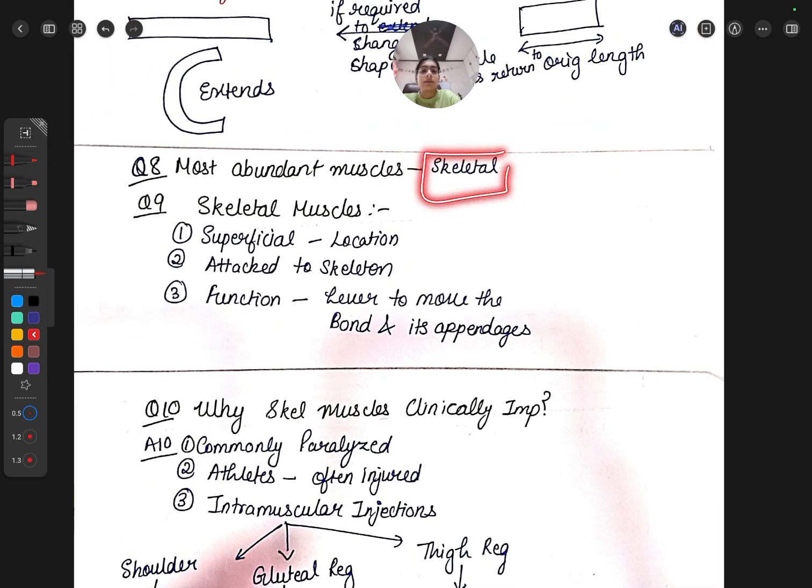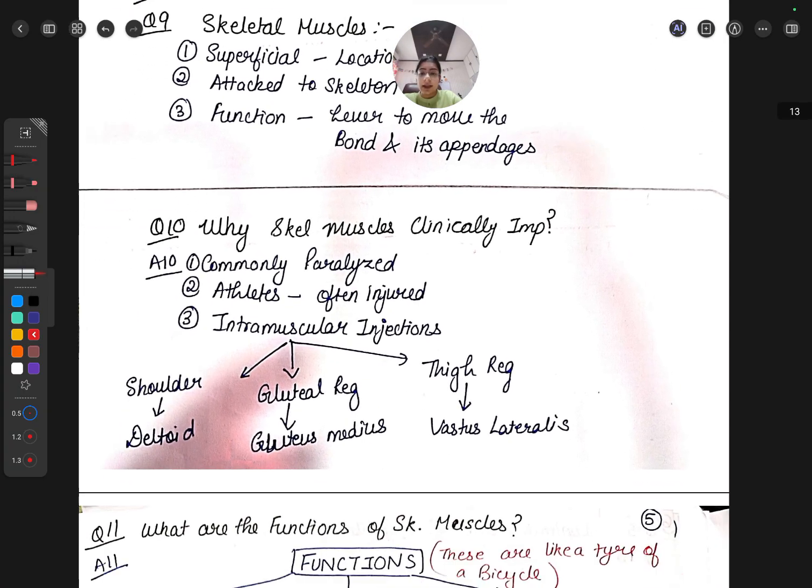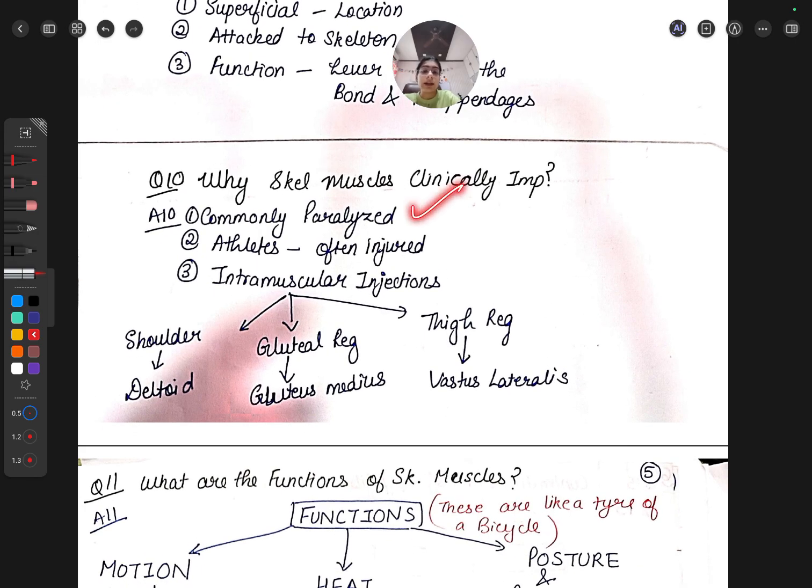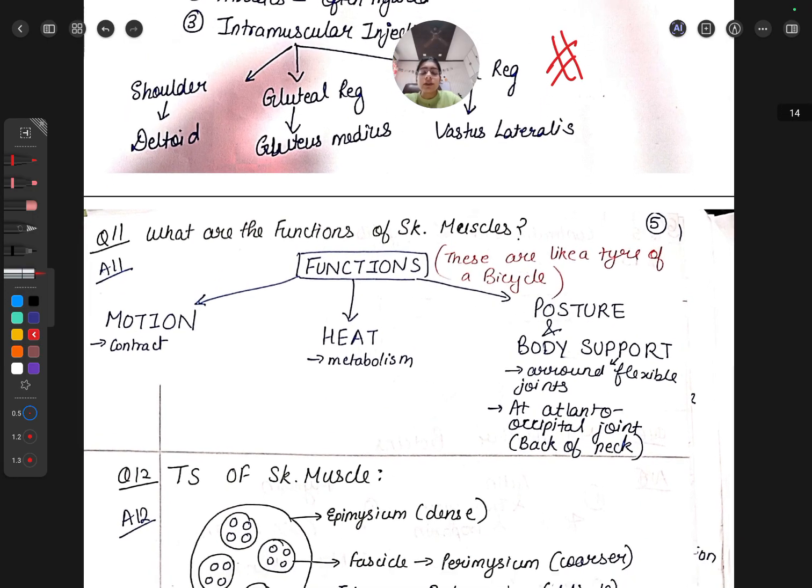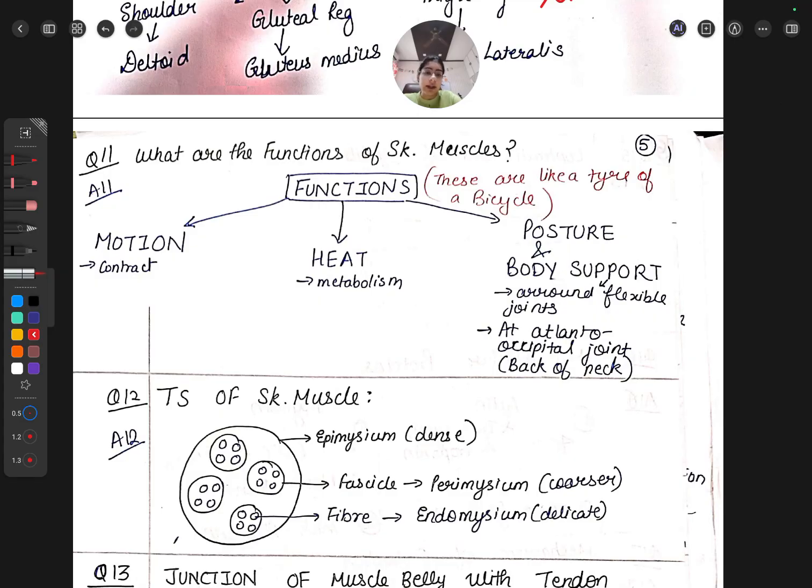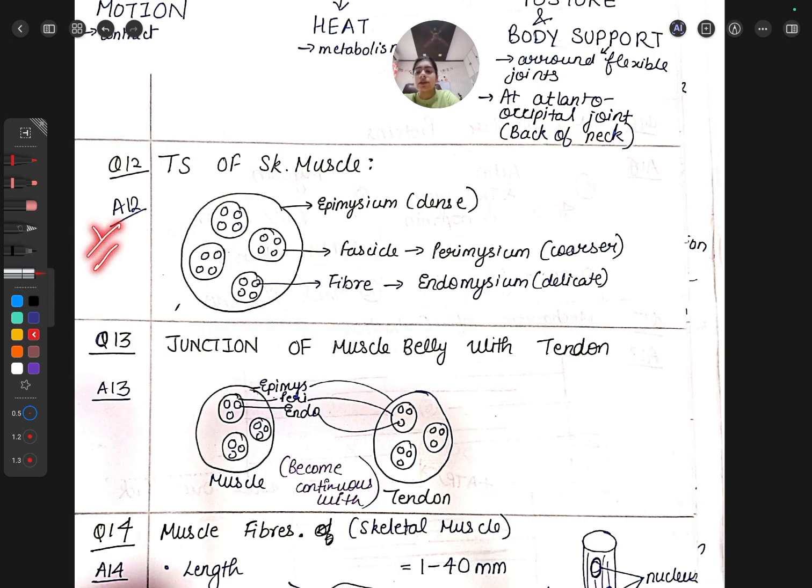Skeletal muscles are most abundant. They're clinically important because they're commonly paralyzed, often injured, and intramuscular injections are given. You need to know these injection sites: shoulder deltoid muscle, gluteal region with gluteus medius, and thigh region with vastus lateralis. Functions of skeletal muscles are motion, heat, posture, and body support.